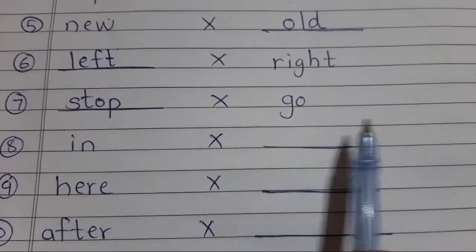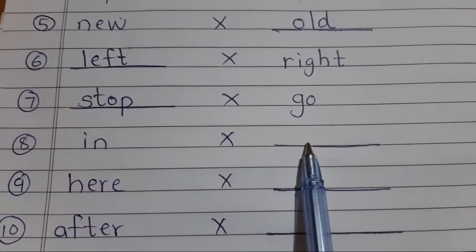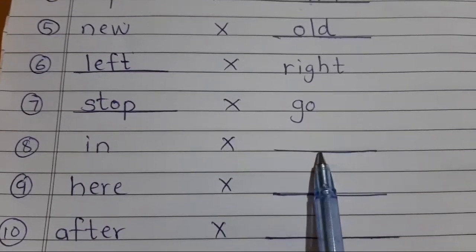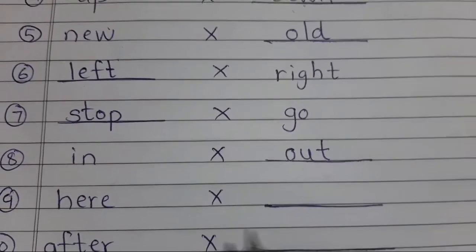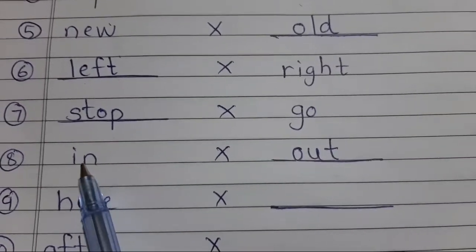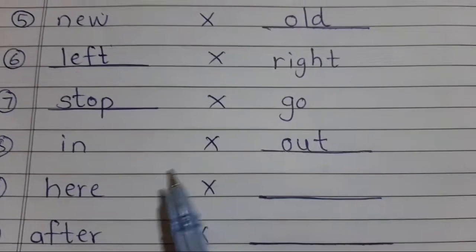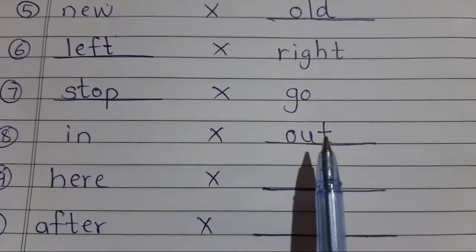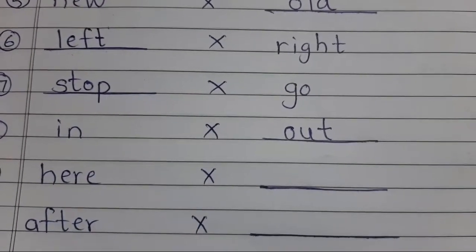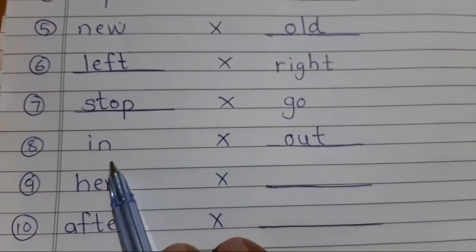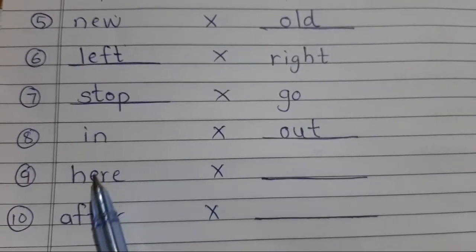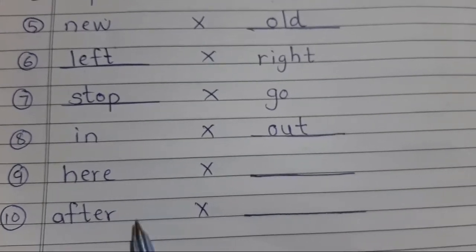Out, O-U-T, out. See here, I am in. In opposite, O-U-T, out. In opposite out, out opposite in. In opposite out, out opposite in. Now next it's here. Here means yahan.